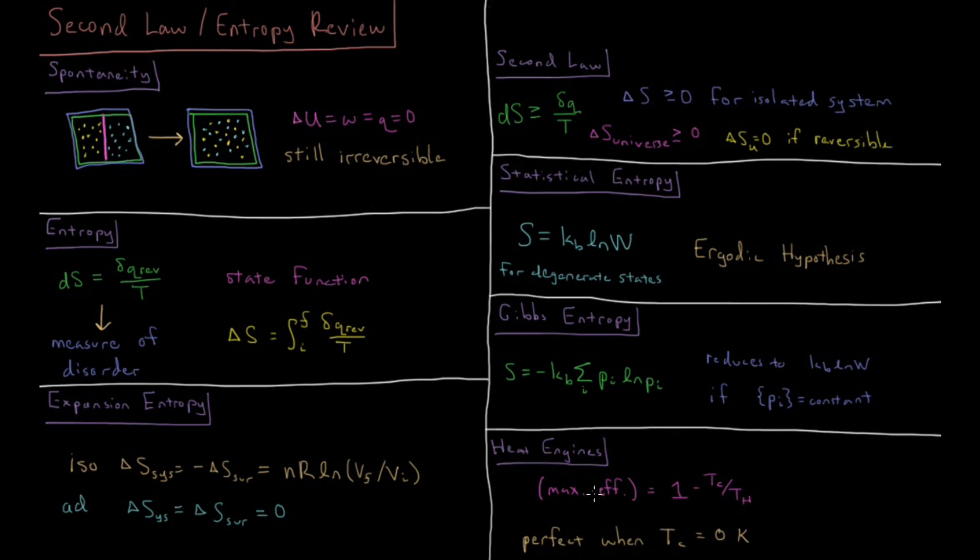We can use the concept of entropy to define the maximum efficiency of heat engines, for example the internal combustion engine which may power automobiles. And the maximum efficiency of a heat engine in converting heat into work is 1, which would be perfect, minus the cold temperature reservoir divided by the hot temperature reservoir.